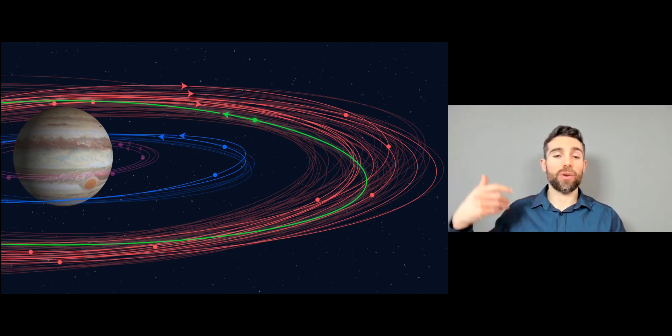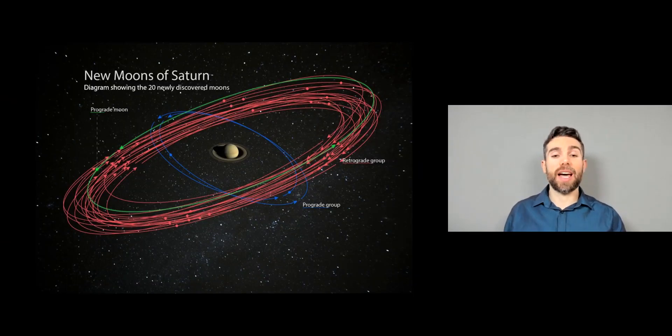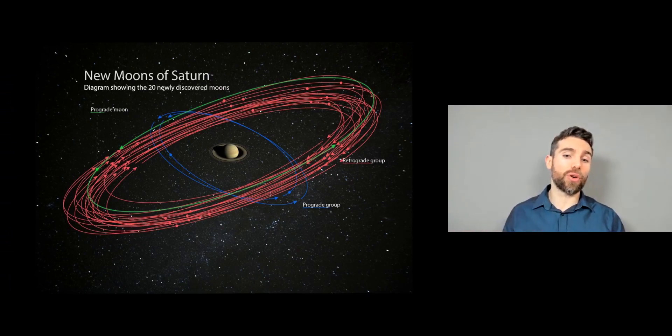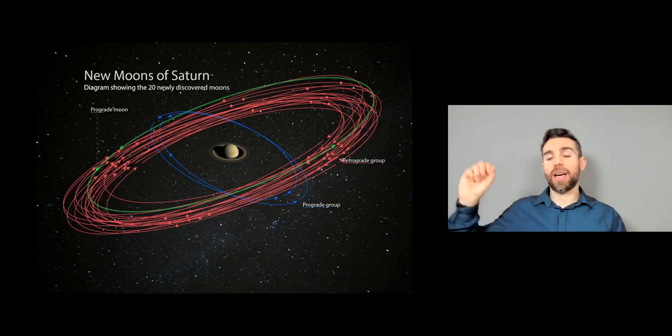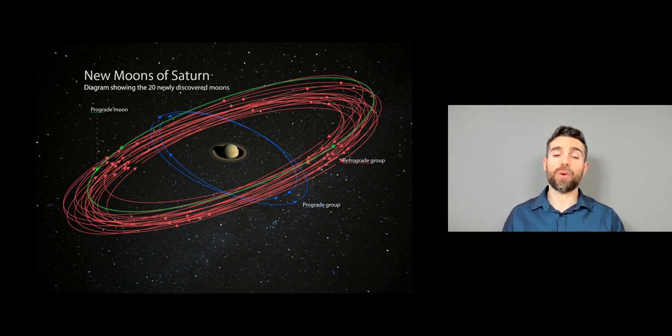These did not form with the planet. And Saturn has exactly the same thing as well. So the blue one is the prograde group going the same way. The retrograde one is further out, and they go in the opposite way, which are captured objects which did not form with that planet.